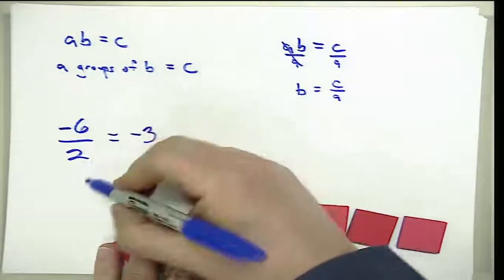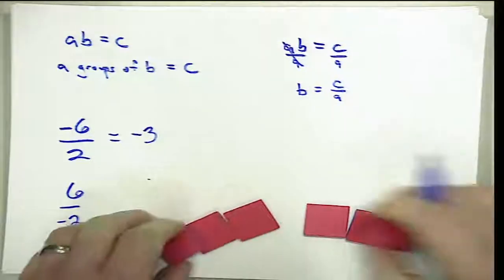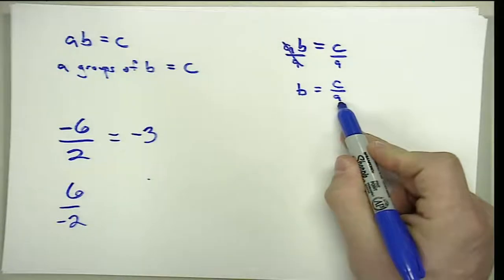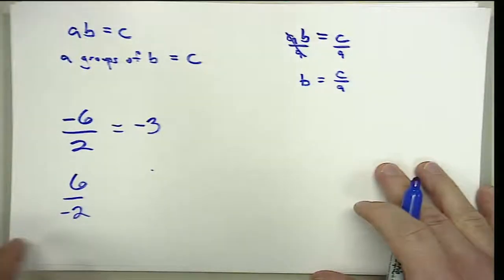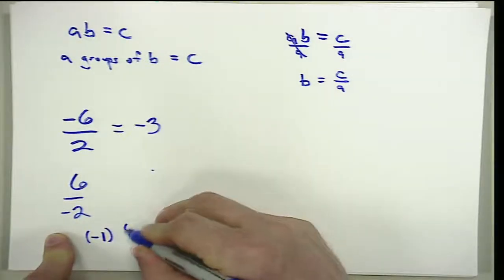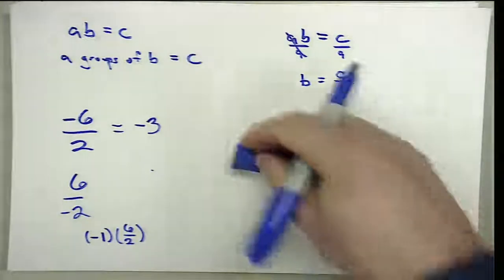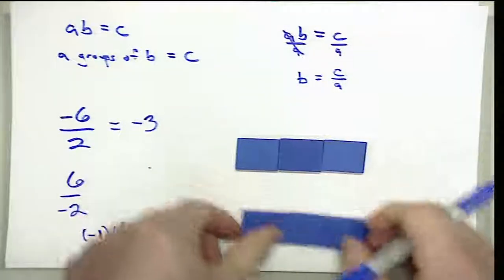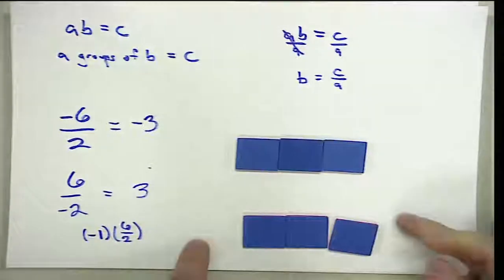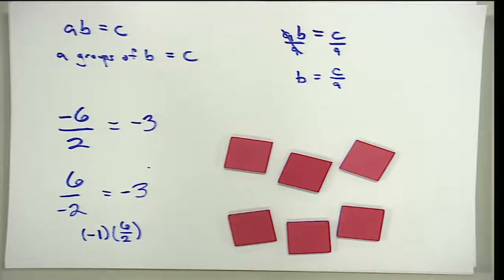If we had six divided by negative two, the denominator tells us how many groups — but we can't do negative two groups, so we factor off that negative again and handle six divided by two, then take the opposite. We show six into two groups — there are three in each group — but we don't want that; we want the opposite, which is negative three.